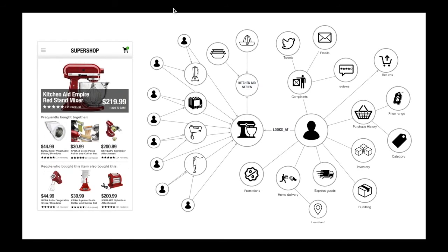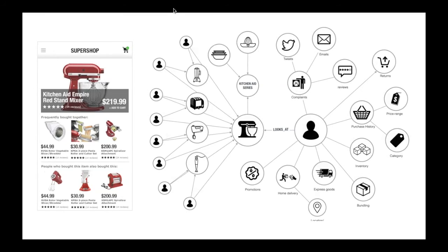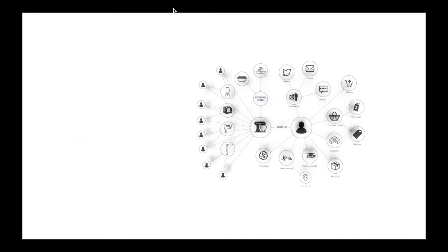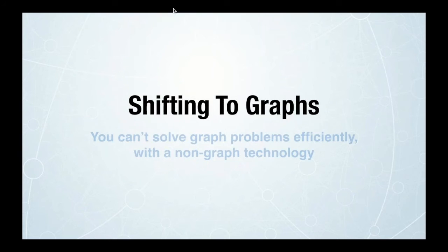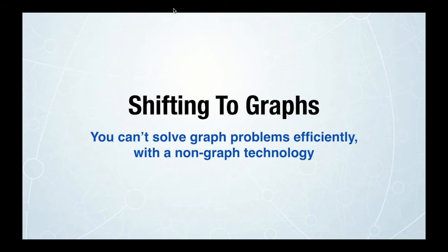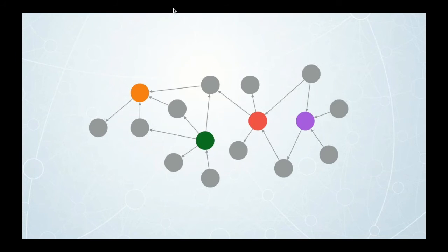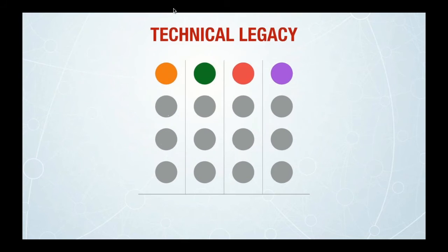The more you know about your consumer, the more relevant your recommendations will be and the better the chances you'll make a sale. This is a numbers game — at scale, it could have significant impact on revenues, and this is achievable using graphs. What we're seeing is a technology shift: you can't really solve graph problems efficiently with non-graph technology. In the retail example, this only works if the data is stored as a graph. Many traditional companies, especially in retail, have a technical legacy with data structured to perform specific tasks.